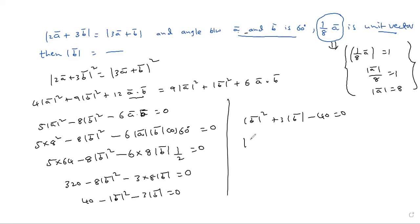8 and 5 combination, easier factorization. 8 mod B minus 5 mod B. Simple quadratic equation, easy factors: mod B plus 8, mod B minus 5. Mod B plus 8 into mod B minus 5. Finished.